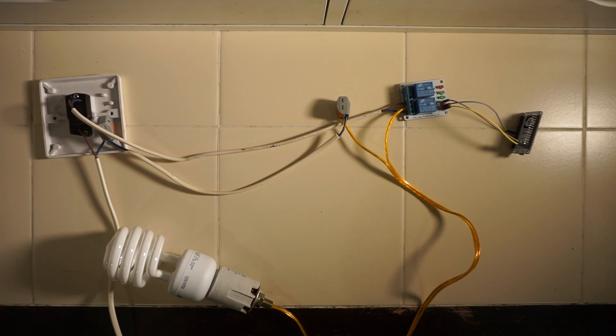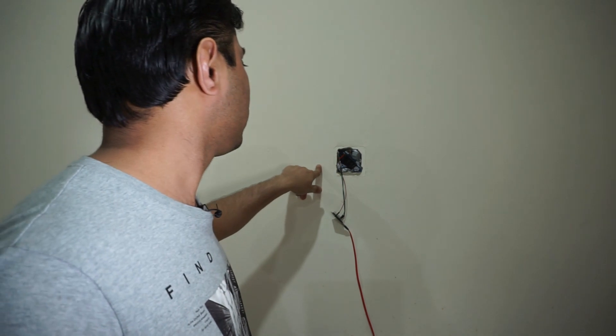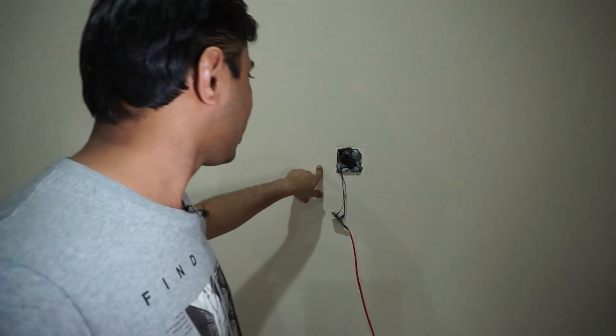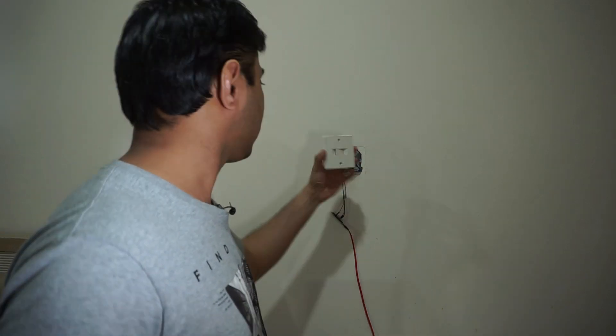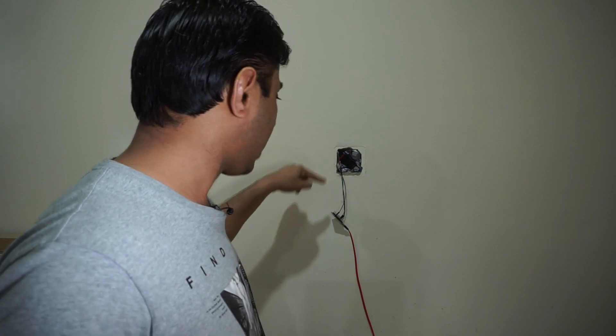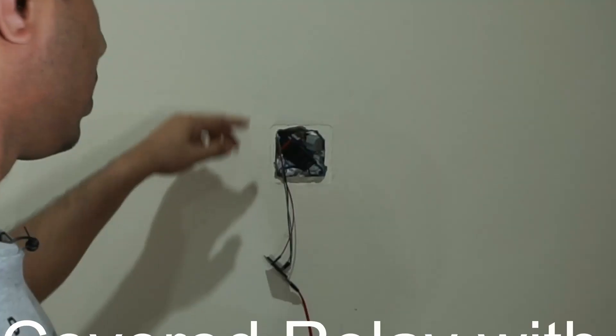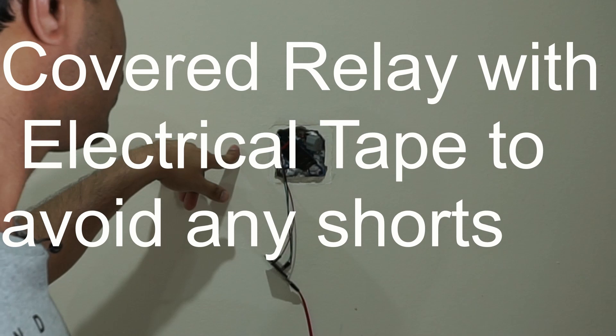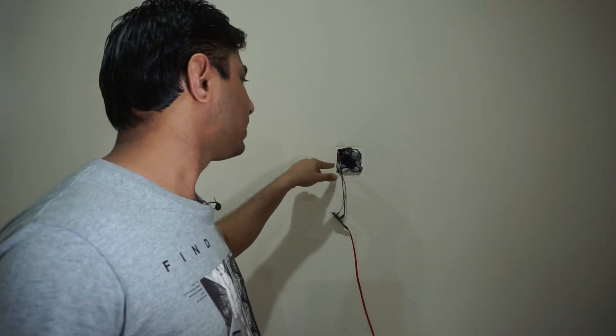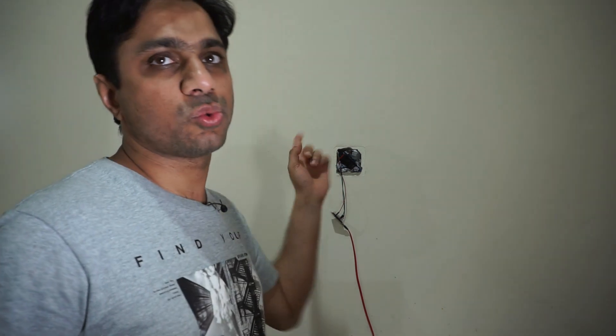Now we'll see how I have implemented this thing in my setup. This is one of the switch boxes which is close to my bed. I have replaced the switch which was a two-way switch with this relay and ESP32. The main live voltage goes to the relay common, and NO and NC of the relay go to the other switch which is close to the door.